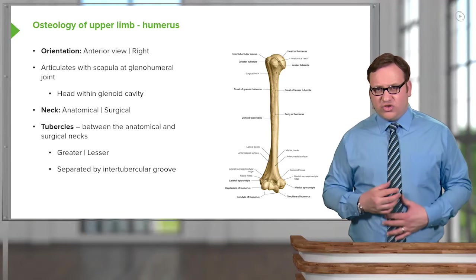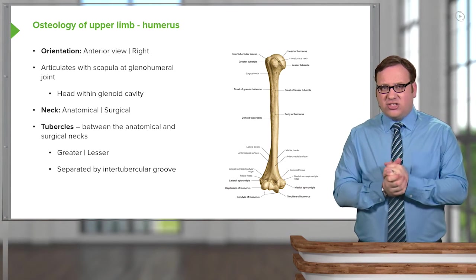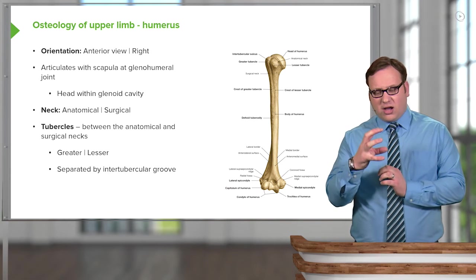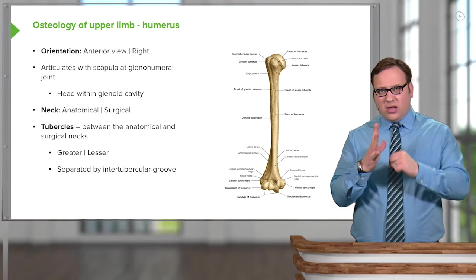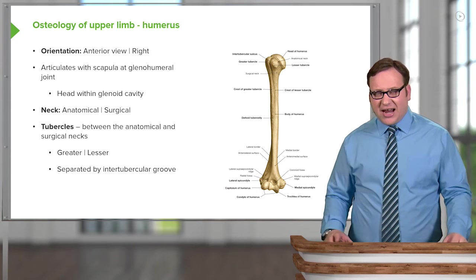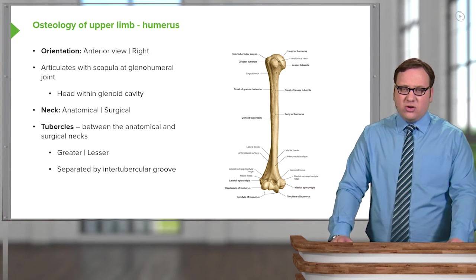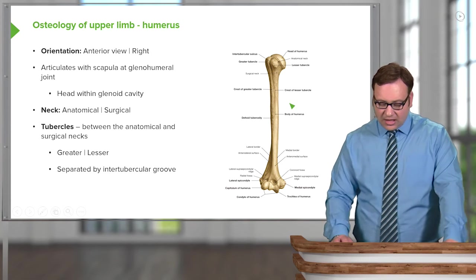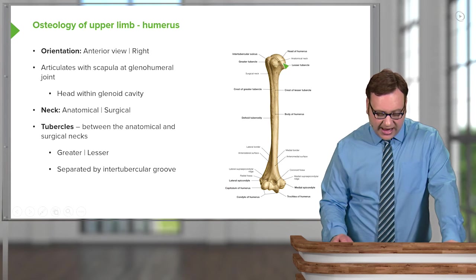We'll come back to the glenohumeral joint and its ligaments in more detail later on. The glenoid cavity is very shallow — it's not a cup-like structure with the head sitting into it. The head of the humerus sits alongside it, and due to this shallow glenoid cavity, the upper limb is very mobile, allowing the arm to move well above the head.